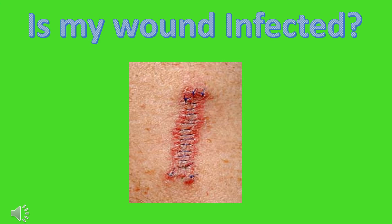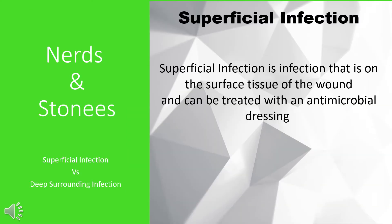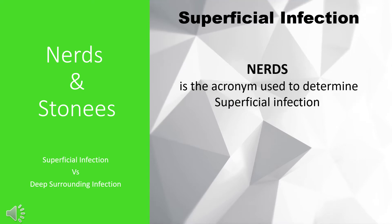Today we're going to learn the difference between superficial and deep and surrounding infection. Superficial infection is infection that is on the surface tissue of the wound and can be treated with an antimicrobial dressing. NERDS is the acronym used to determine superficial infection.